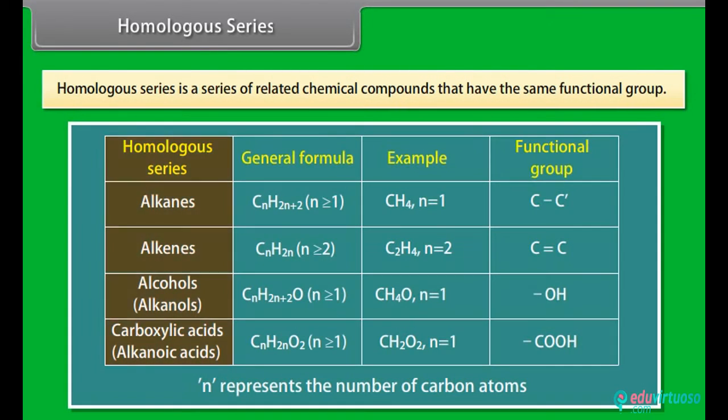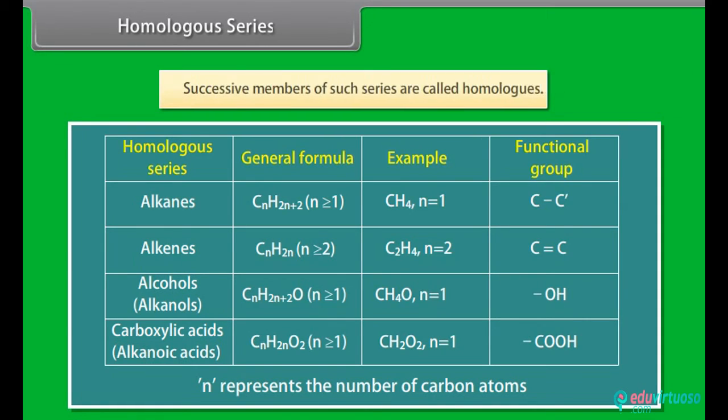Homologous series is a series of related chemical compounds that have the same functional group. These differ in formula by a fixed group of atoms. The successive members of such series are called homologous.